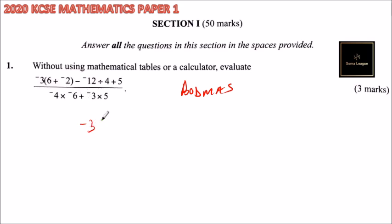So we have 4, then we have minus. From there we don't have Of, but we have Division. So we are going to divide 12 by 4, that will give us 3, and then we have 5.